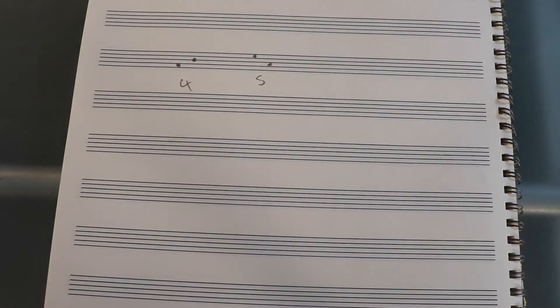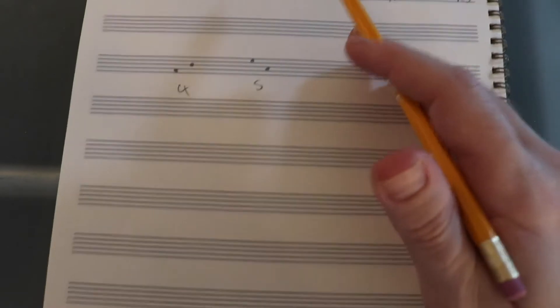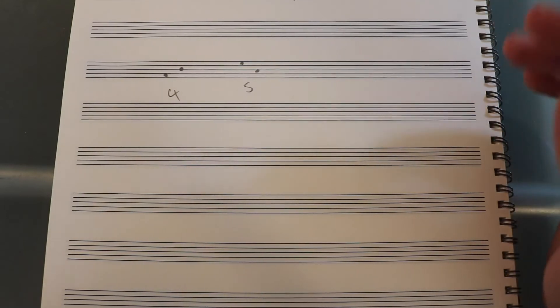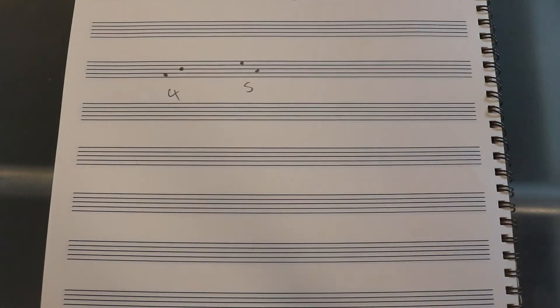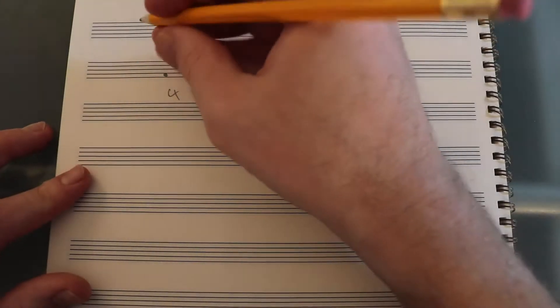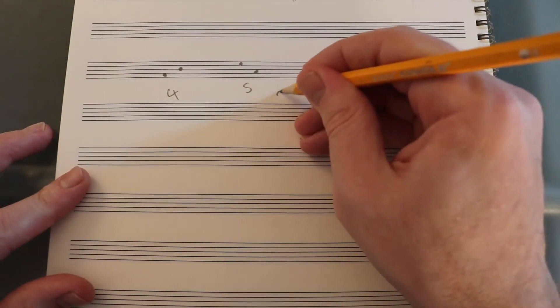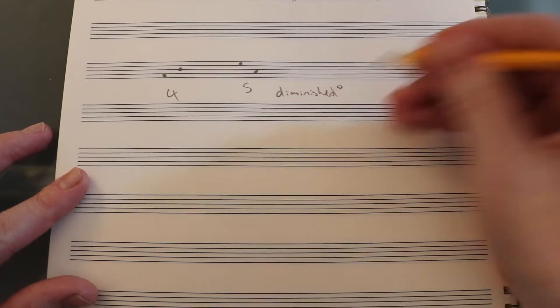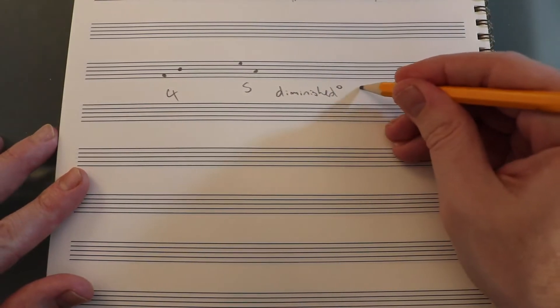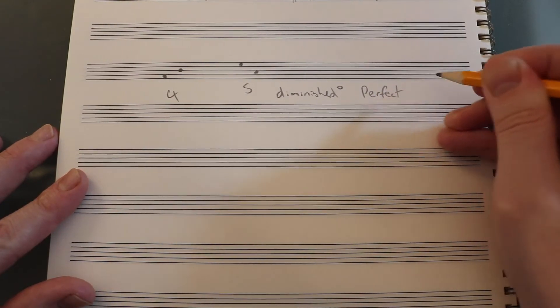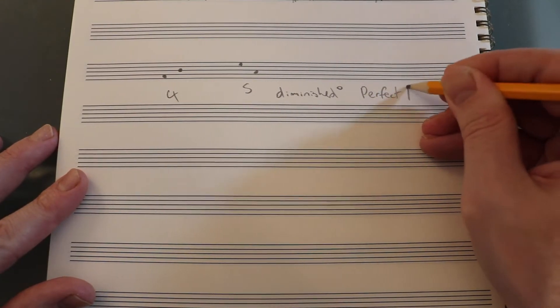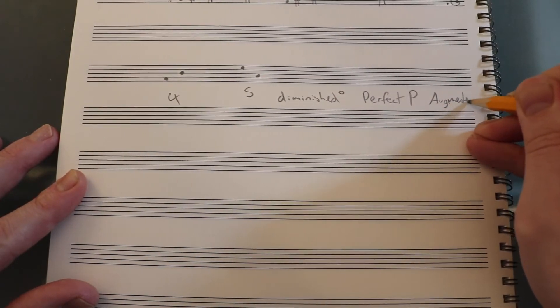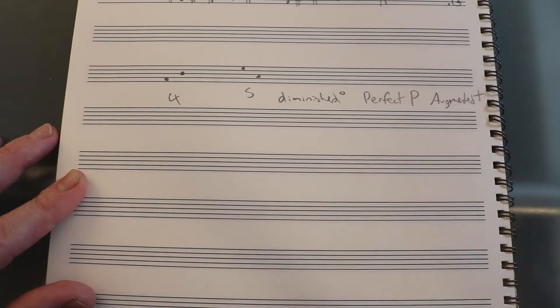So hopefully this part is easy. It's just a matter of counting to get a fourth or a fifth. But what changes here is the quality. With seconds and thirds, we had minor and major, and that was nice because it was consistent. But with fourths and fifths, we go on to a different system where we have these three words. I'll put them over here. Diminished, abbreviated with a little degree sign, perfect, abbreviated with a P, and augmented, abbreviated with a plus sign.